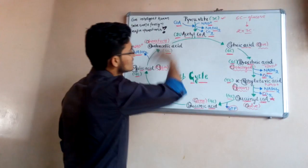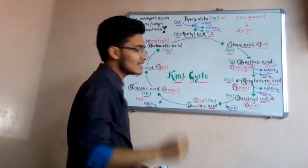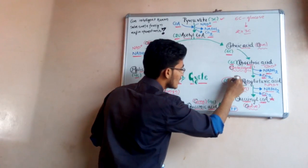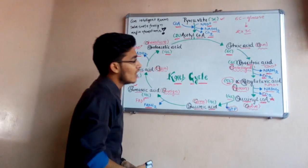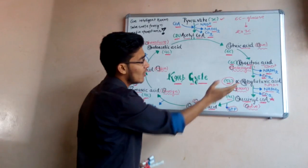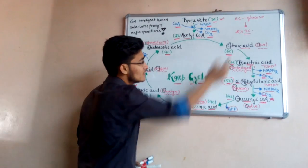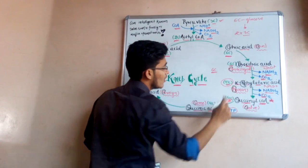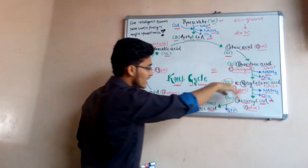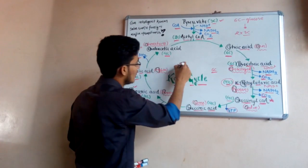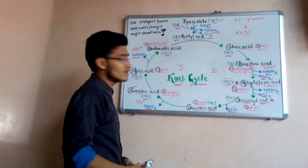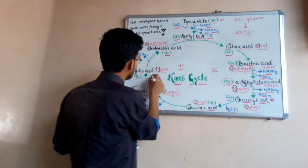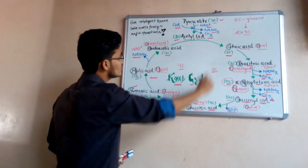The interesting thing to note in this cycle is that the only five-carbon compound is alpha-ketoglutaric acid. All compounds before ketoglutaric acid in the cycle are six-carbon compounds, and all compounds after alpha-ketoglutaric acid are four-carbon compounds. This is a simple way to remember how many carbons each compound has in this cycle.